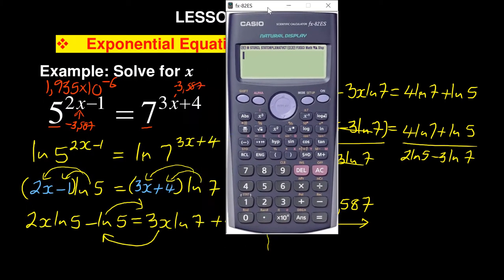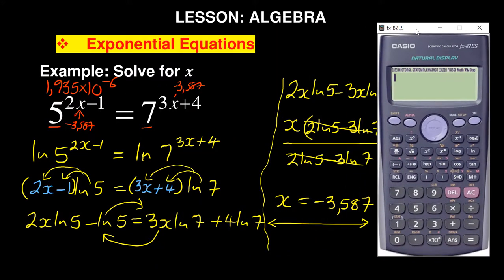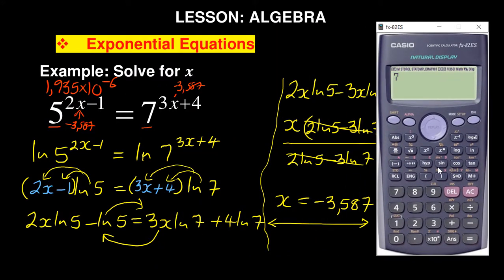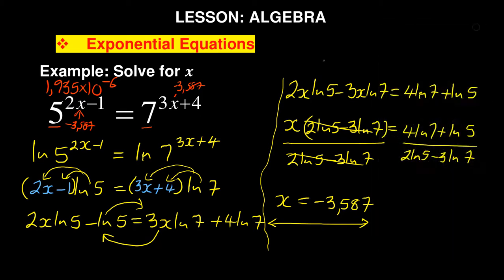Let's try the right-hand side: 7 to the exponent 3 times -3.587 plus 4. If you do that, it's 1.933 times 10 to the power negative 6. You can see this gives me 1.933 times 10 to the power negative 6. These answers are almost the same, the difference is very small, which means therefore your value of x is correct.